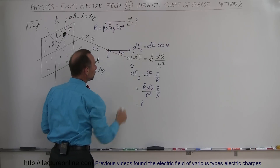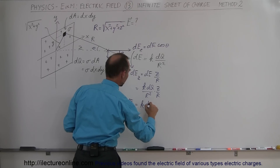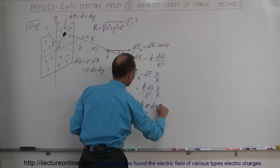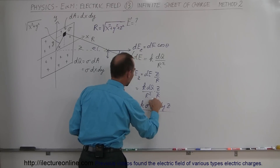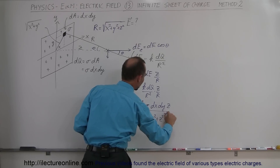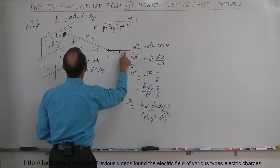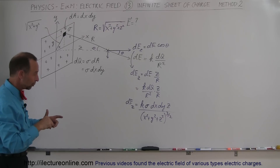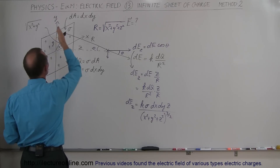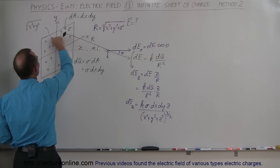Substituting dQ equals sigma dx dy, we get dE_z equal to k sigma dx dy times z, all divided by (x² + y² + z²) to the three-halves power. This gives us the z-component of the electric field caused by the small element dQ. Now we need to integrate this in two steps: first in the x direction, then in the y direction.